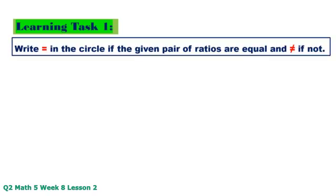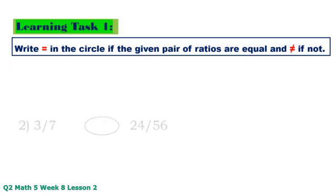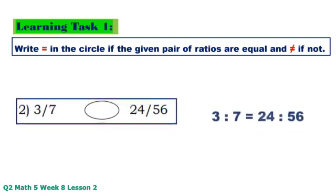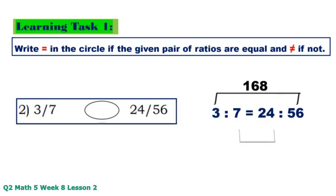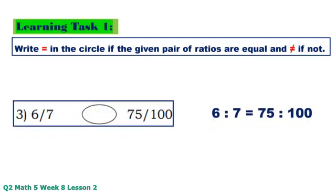Learning task 1: Write equal sign in the circle if the given pair of ratios are equal, and not equal sign if not. Number 1: 64 times 15 equals 960, 12 times 80 equals 960. Equal. Number 2: 3 times 56 equals 168, 7 times 24 equals 168. Equal.